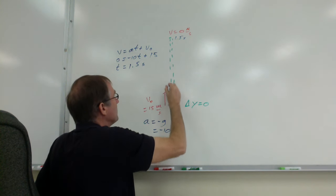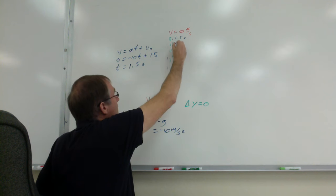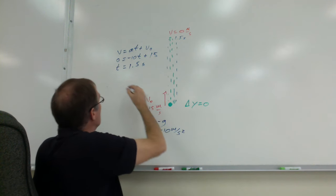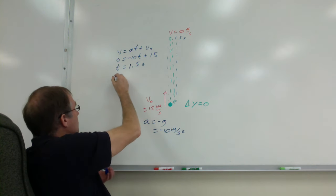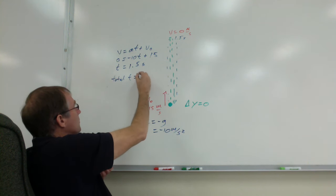So this is up here at 1.5 seconds. If it takes 1.5 seconds to go up, it must take 1.5 seconds to go down. The next question asks for the total time, so total t equals 2 times 1.5, which of course is 3 seconds.